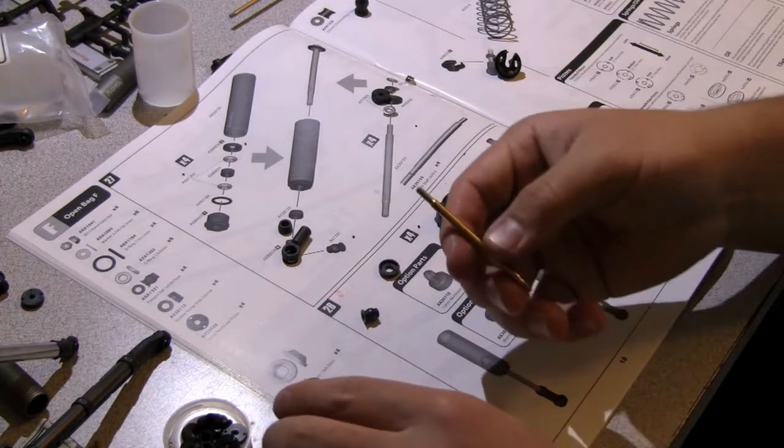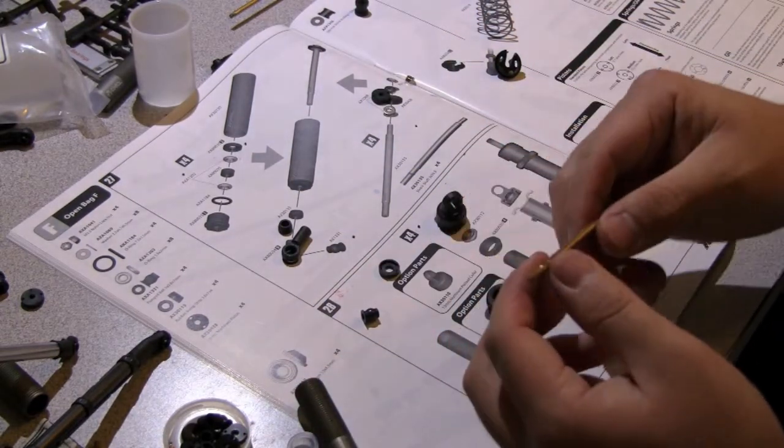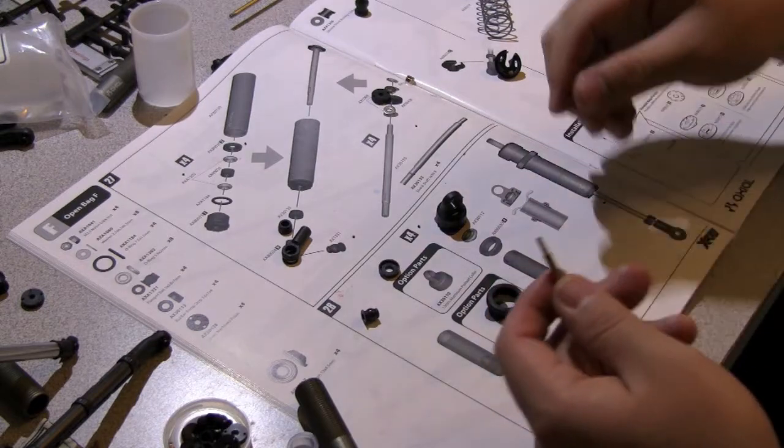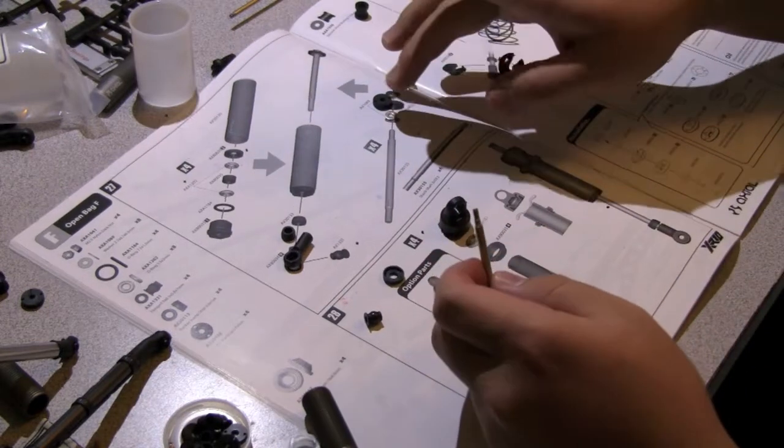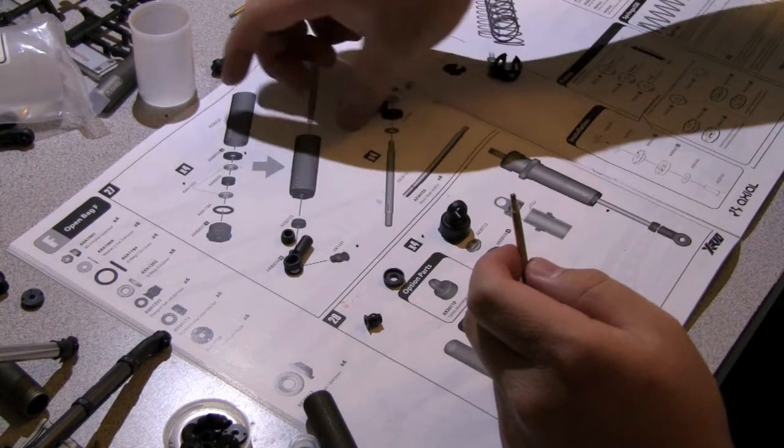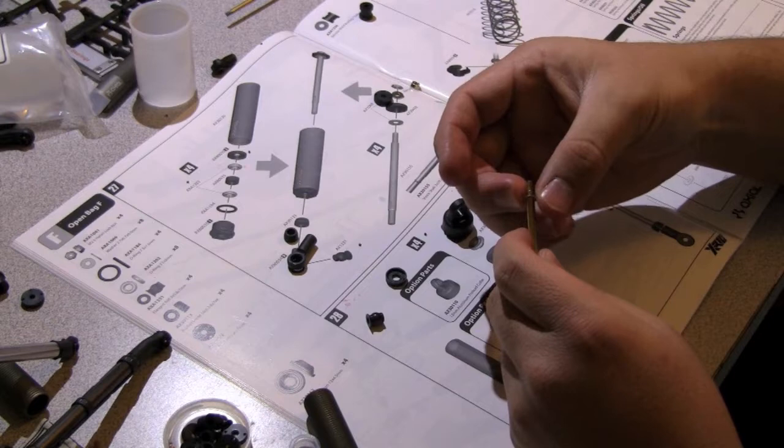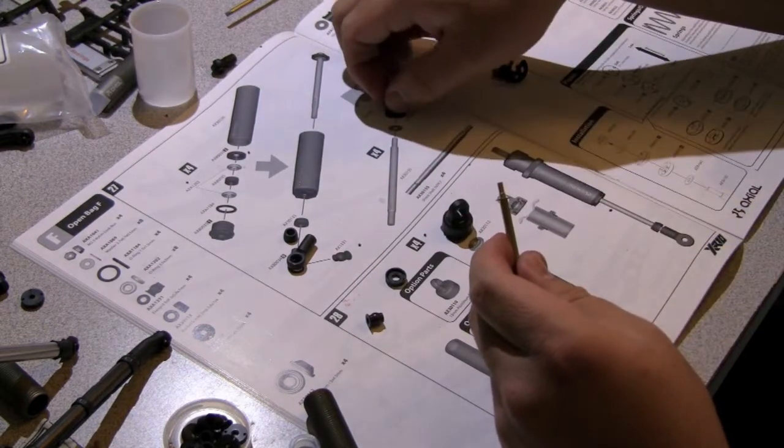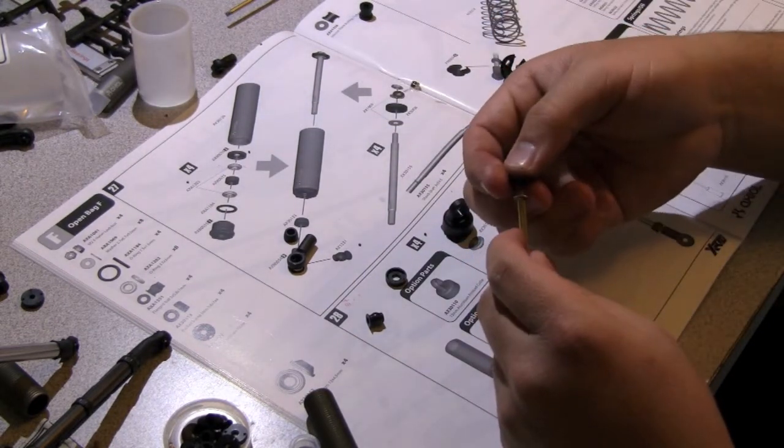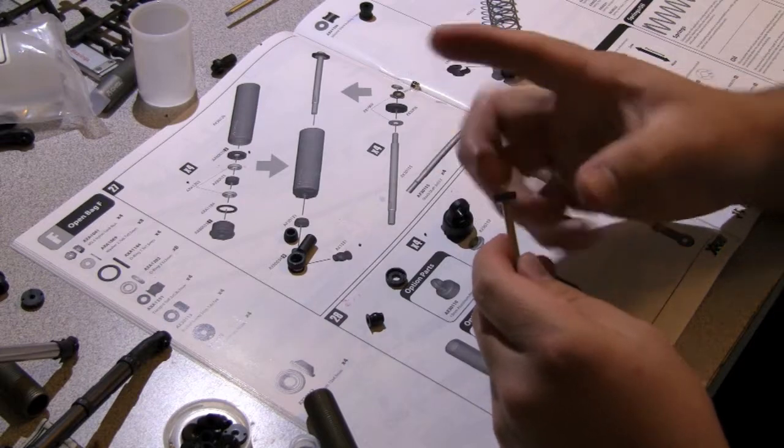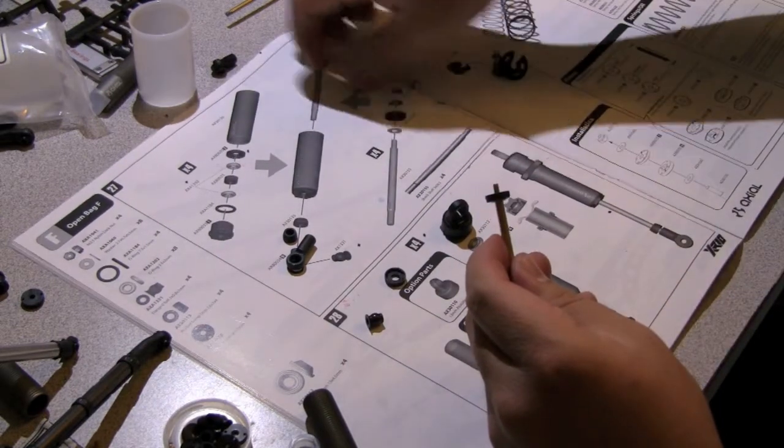And to build this, what you basically want to do is get four of the 2.7 x 6.7 x 0.5 mm washers, metal washers, and then put on the shock, I'm not really sure what it's called but it's the part in the shock that actually has the holes, the plastic.